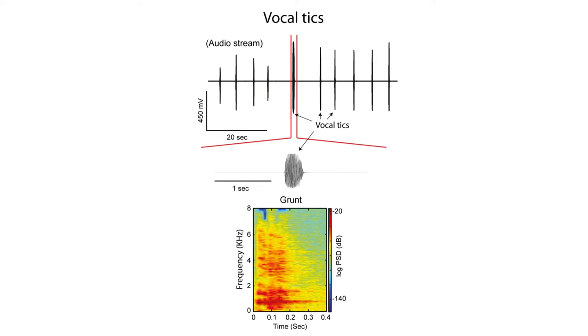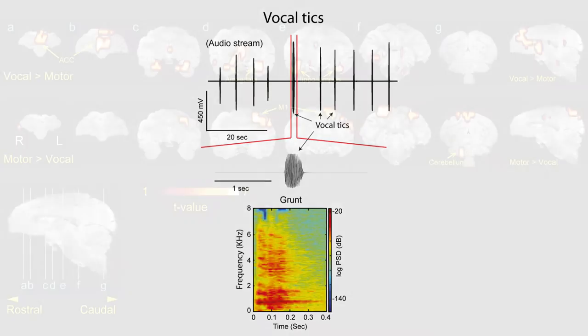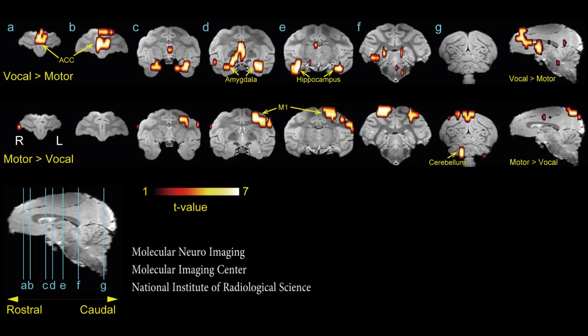As these vocalizations were similar in sound to grunts produced by normal animals, we considered them to be analogous to complex vocal tics as seen in human tic disorders. Once tic states had been induced, it was possible to image global brain activity using radio-labeled water as a measure of regional cerebral blood flow, rCBF.